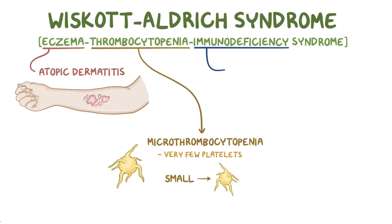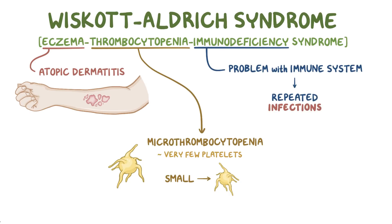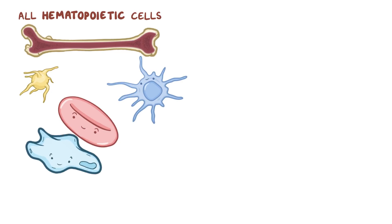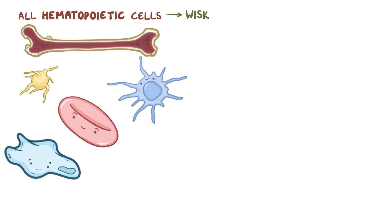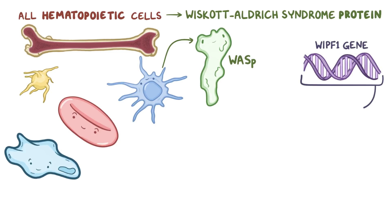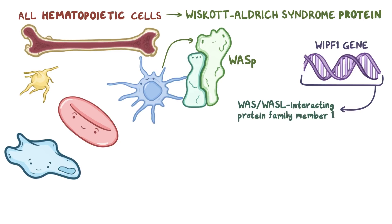And there's a problem with the immune system that leads to repeated infections. All of the hematopoietic cells, which are cells in the bone marrow, produce Wiscott-Aldrich syndrome protein, or WASP for short. There's also a gene called the WIPF1 gene, which encodes a protein called WAS-WUS ligand interacting protein family member 1, which helps stabilize Wiscott-Aldrich protein.